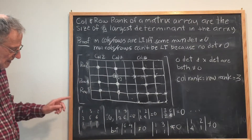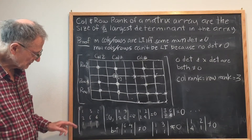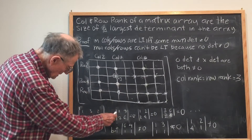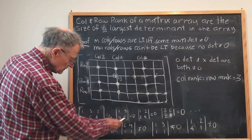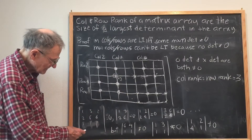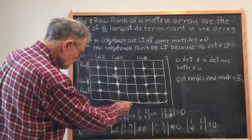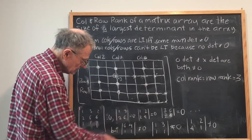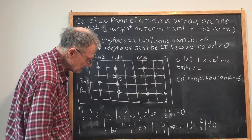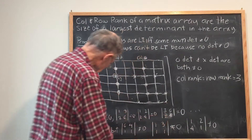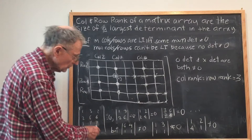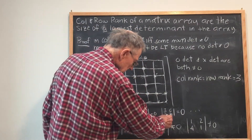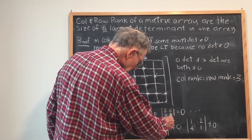Then I am going to look at the 2 by 2 determinants in this array. Some typical 2 by 2 determinants are: |1, 3 / 2, 6| which is equal to zero obviously, because the second row is twice the first. The determinant |1, 2 / 2, 4| is equal to zero because that column is twice the other column. Another one equal to zero is |3, 2 / 6, 4|, because that column is twice this column.